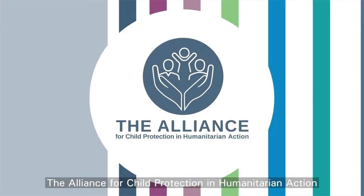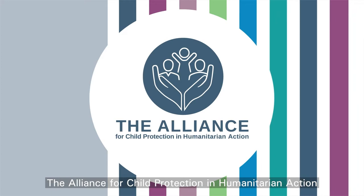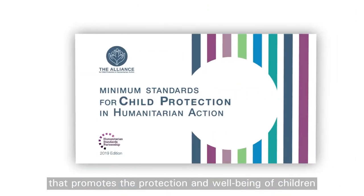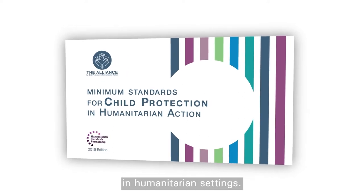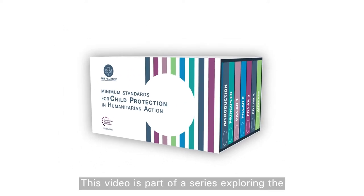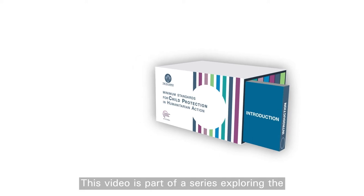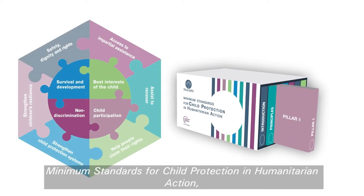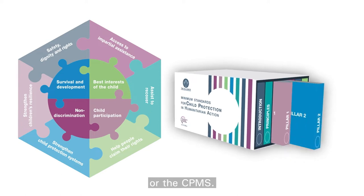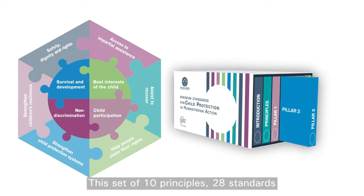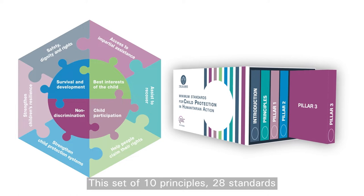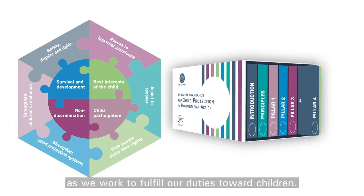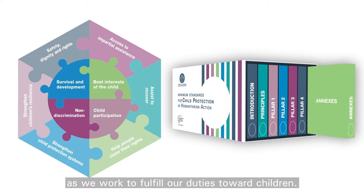The Alliance for Child Protection in Humanitarian Action is the global interagency network that promotes the protection and well-being of children in humanitarian settings. This video is part of a series exploring the minimum standards for child protection in humanitarian action, or the CPMS — a set of 10 principles, 28 standards and accompanying guidance key for all humanitarians as we work to fulfill our duties toward children.